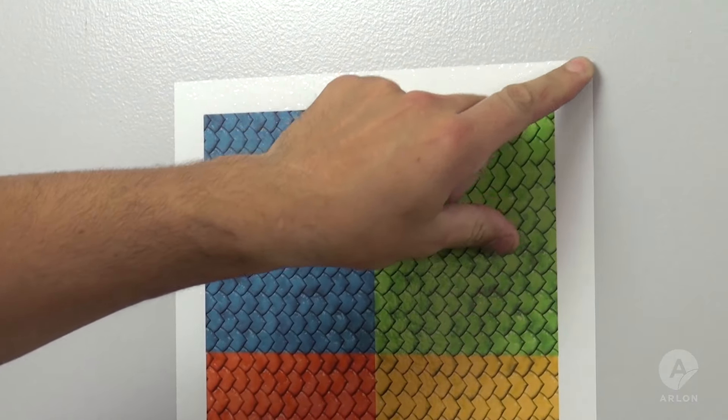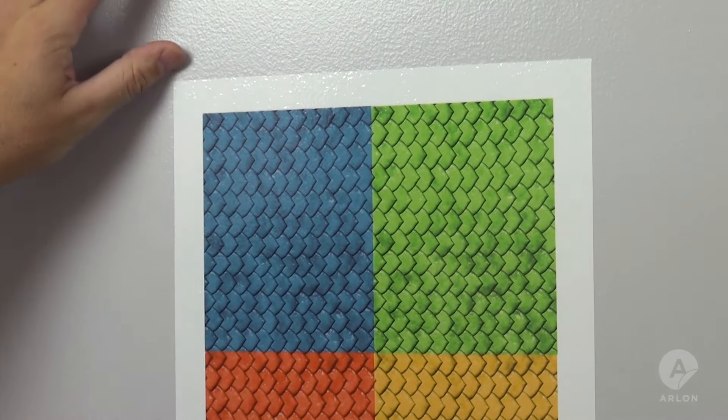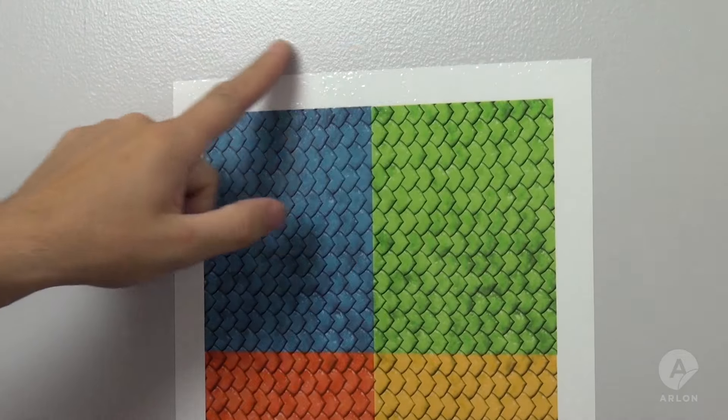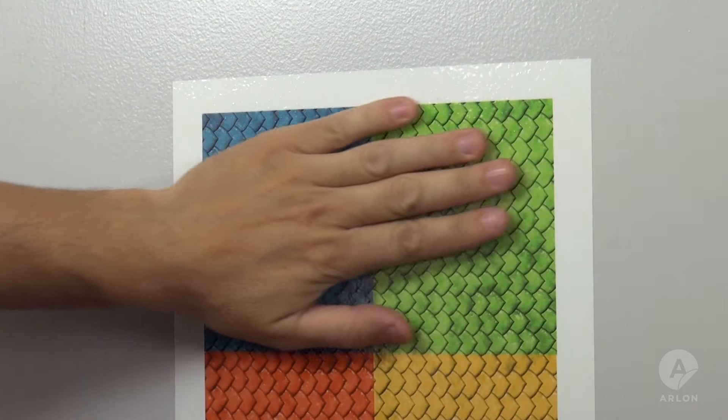Clearly, sample 1 will be our media of choice. There is no bubbling, and all the edges are still down, and there is no shrinkage.